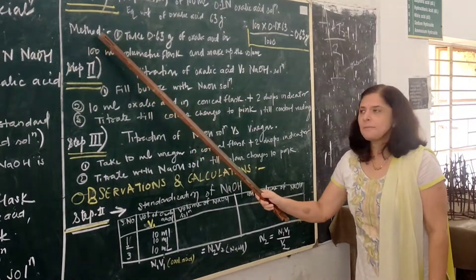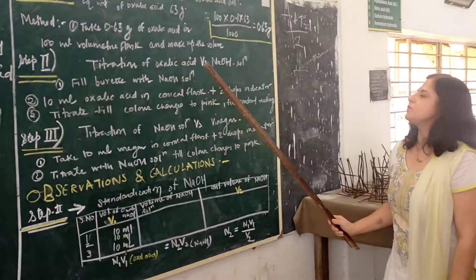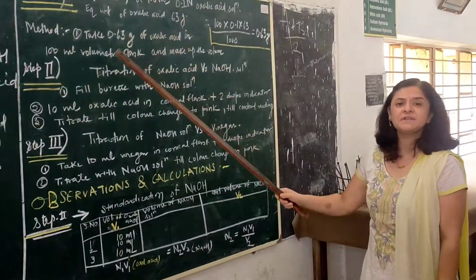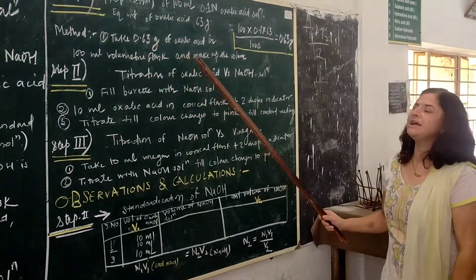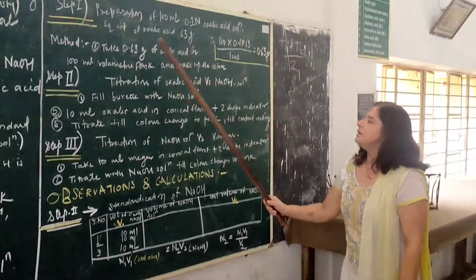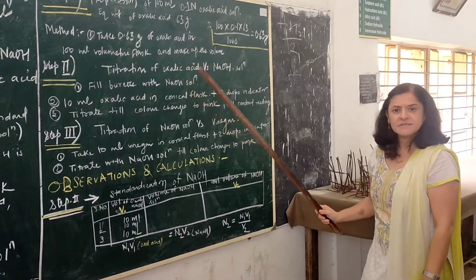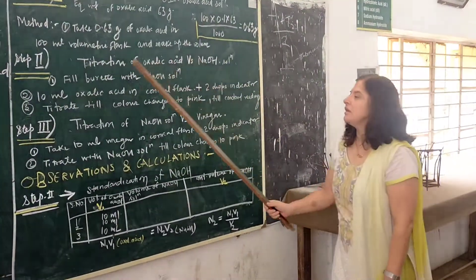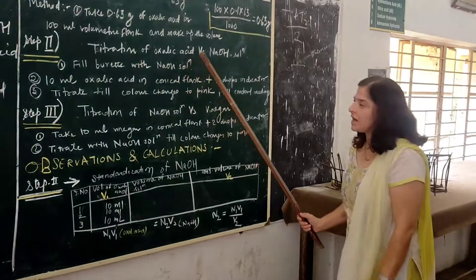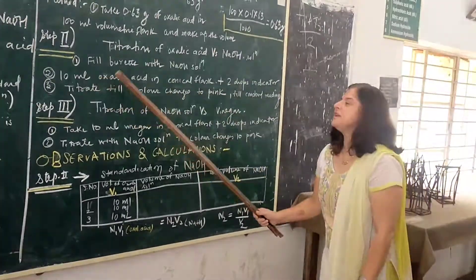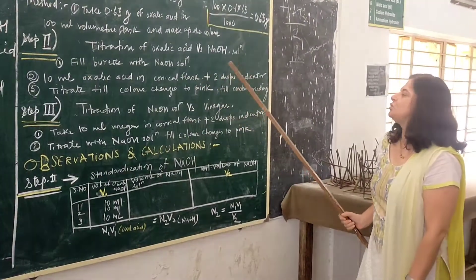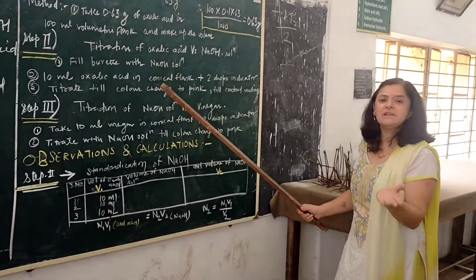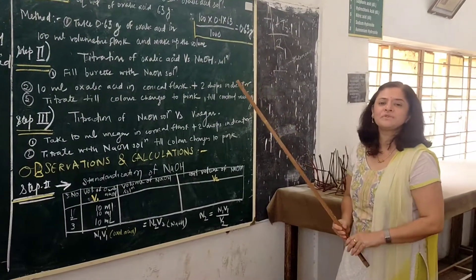In step two, titration of oxalic acid versus NaOH solution: the 0.63 grams of oxalic acid is taken in a volumetric flask and made up to volume. We titrate this oxalic acid with NaOH solution to find the exact normality of NaOH. Fit the burette with sodium hydroxide solution, take 10 ml of oxalic acid in conical flask, add two drops of indicator, and titrate till the colour changes from colourless to just light pink. Take 3 constant readings.